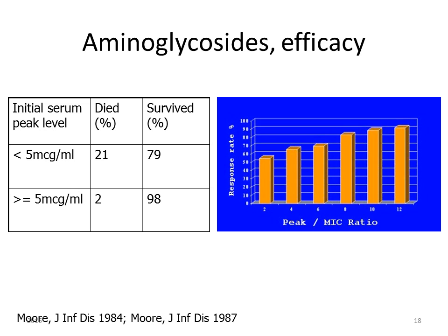Also in human studies, a relationship between the maximum concentration and efficacy has been described. In the table on the left, patients with initial peak levels below 5 micrograms per milliliter had 21% mortality and 79% survival, while patients with peak levels above 5 micrograms per milliliter had only 2% mortality and 98% survival. In the figure on the right, with an increasing peak-to-MIC ratio, the response rate — the cure rate of an infection — increases.